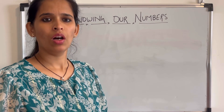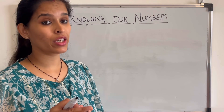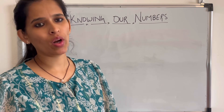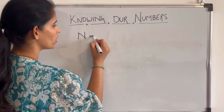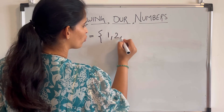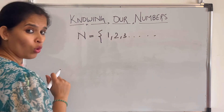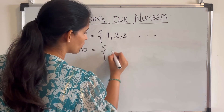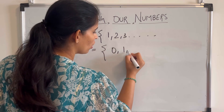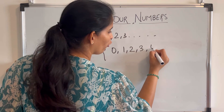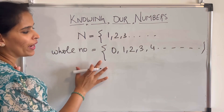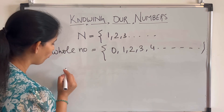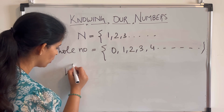What is a whole number? If we add zero to our collection of natural numbers, we get whole numbers. So natural numbers are 1, 2, 3, and so on. If I add zero to this collection — 0, 1, 2, 3, and so on — that becomes my collection of whole numbers. The symbol for whole numbers is the capital letter W.